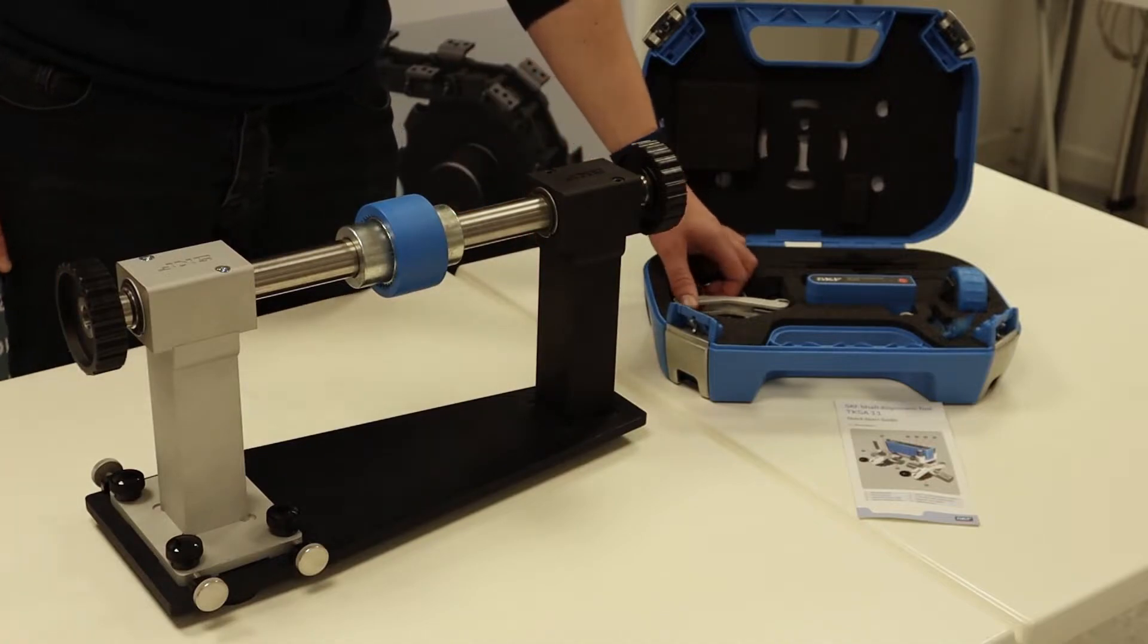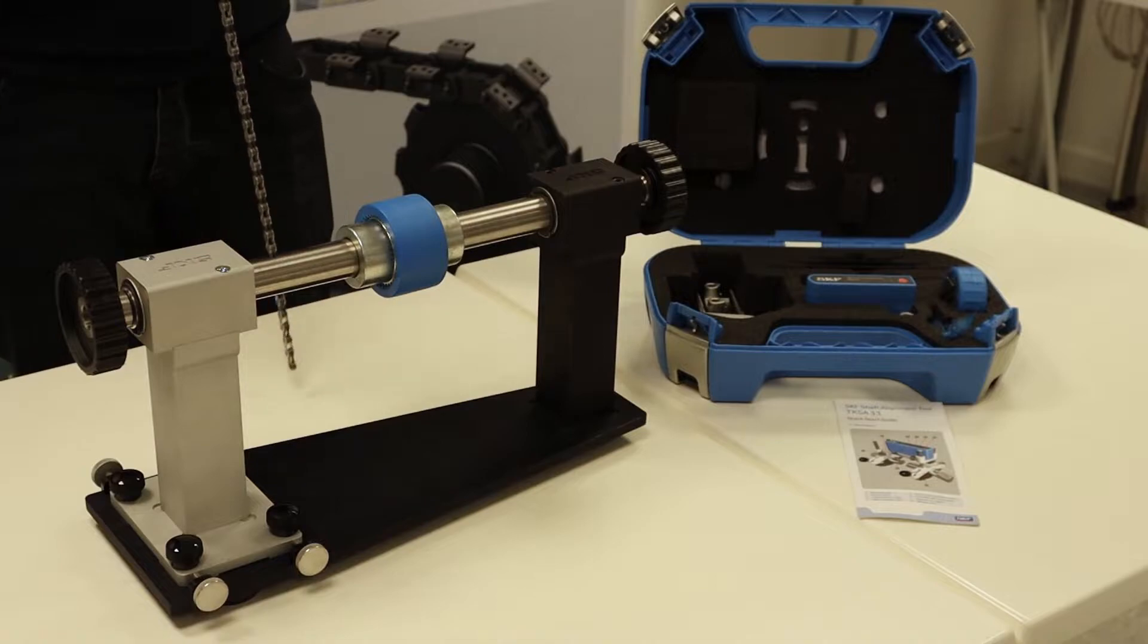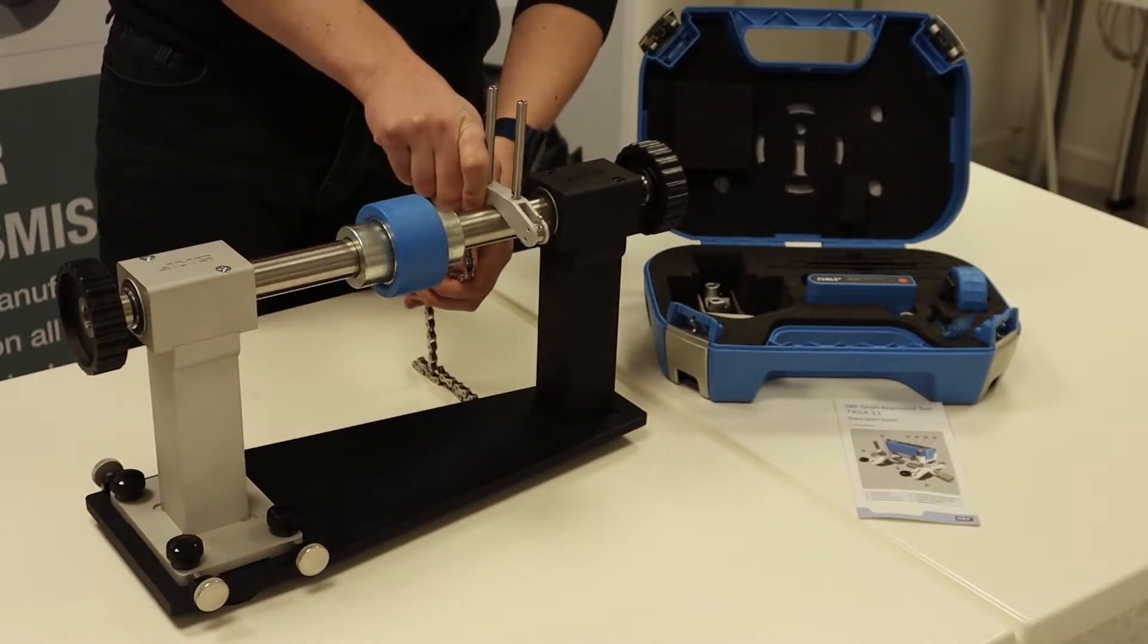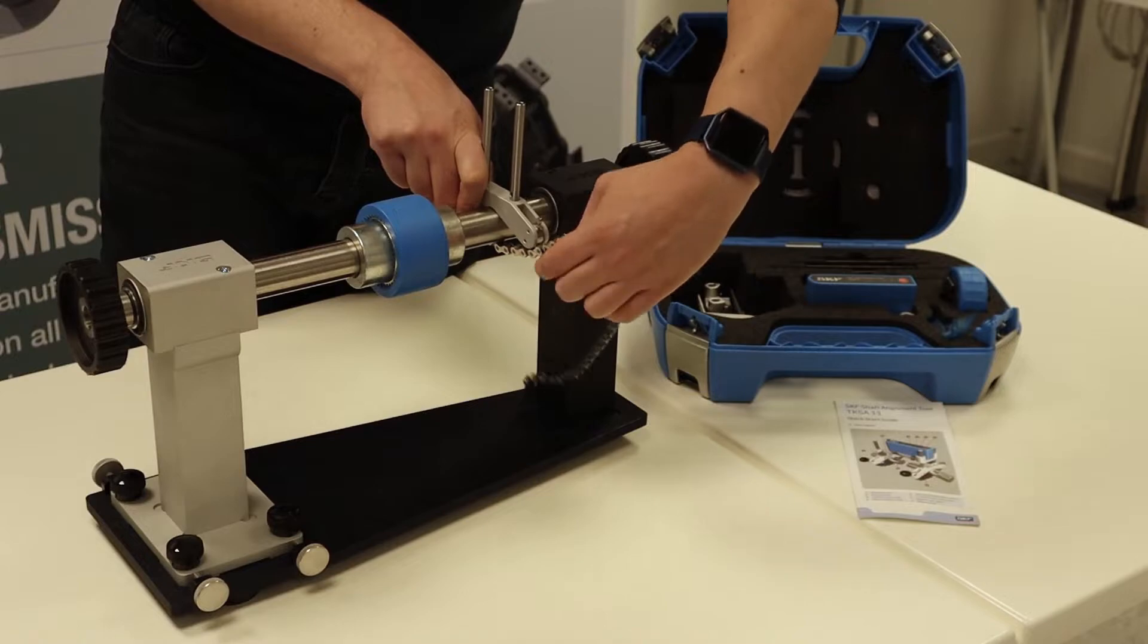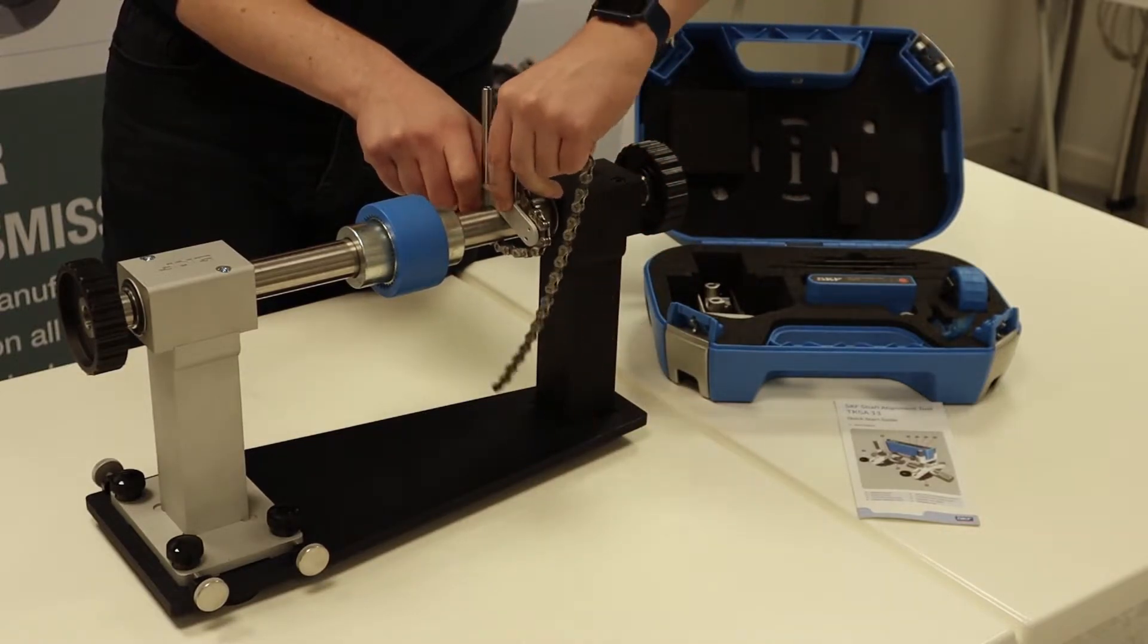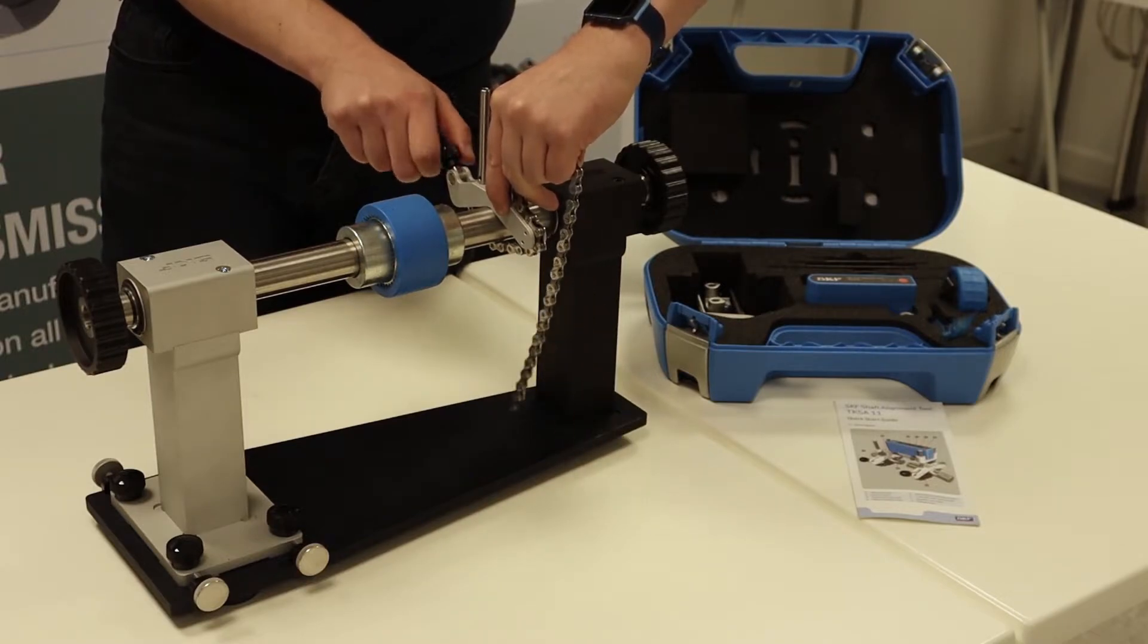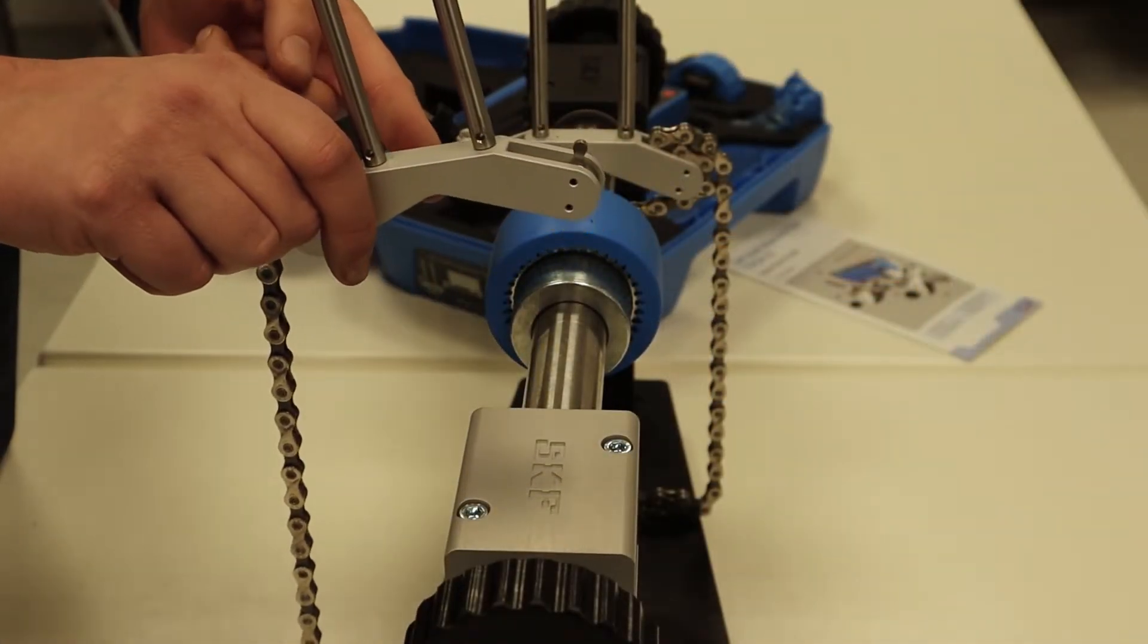So the first thing to do is to fit the mounting brackets. I just need to make sure that the rod's correctly located. The V in the bracket sits on the shaft and the chain goes around the base of the shaft. The pin in the bracket locates in the chain and then you can just tighten the nut up to locate it all in position.